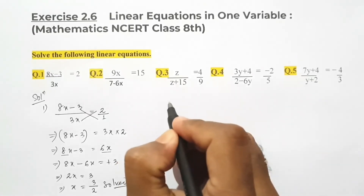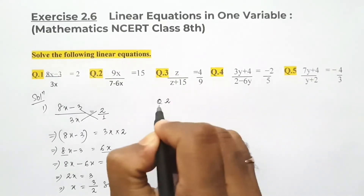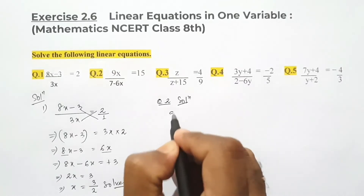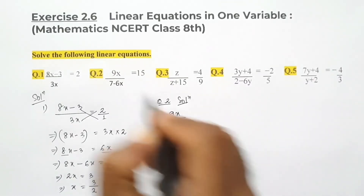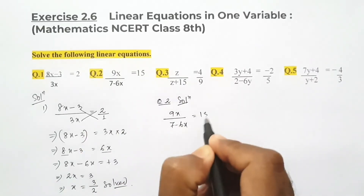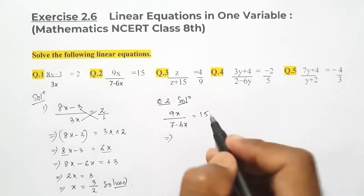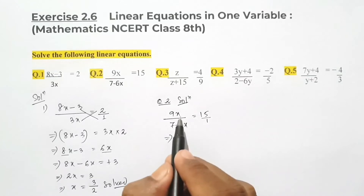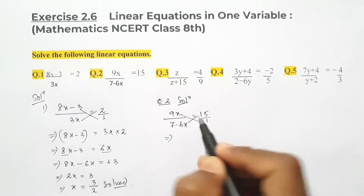Let's start solving question number 2. Here they said 9x / (7 - 6x) = 15. Same type — if nothing is there in the denominator on the right side, we can assume 1 is there. We'll do cross multiplication: 9x into 1 and (7 - 6x) into 15.